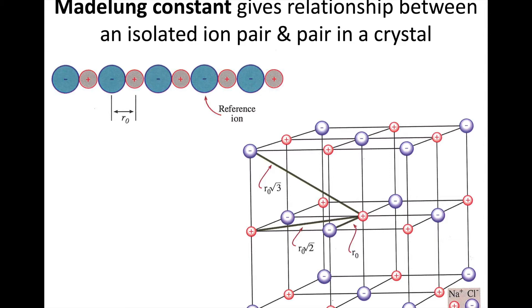You can think of this in a one-dimensional problem: you have a plus-minus pair, and if you keep repeating those, there's going to be an energy between the two that is changed by having other negatives and positives next to it. The same applies in a larger three-dimensional crystal structure. A positive reference ion is surrounded by negatives, but also by positives at slightly longer distances, and then another set of negatives further apart, going on basically infinitely. We account for all of those with this Madelung constant.